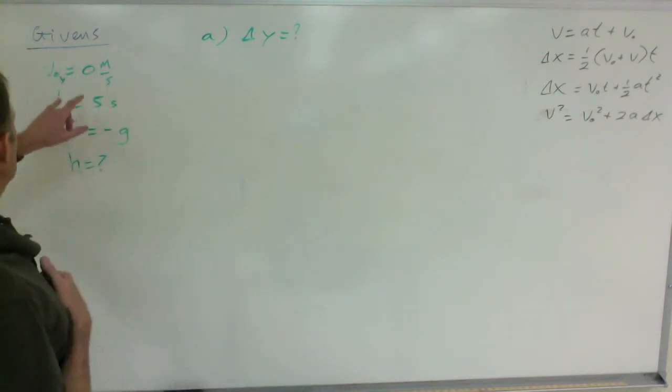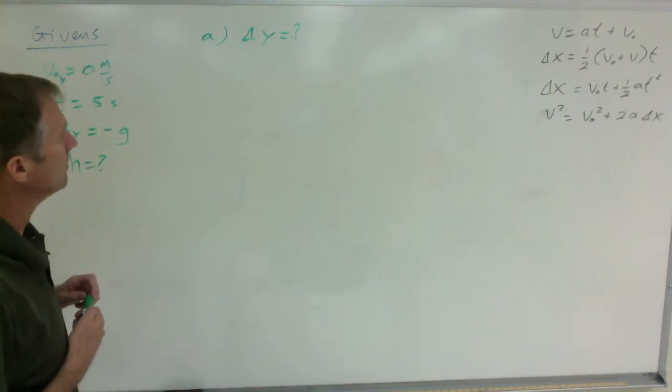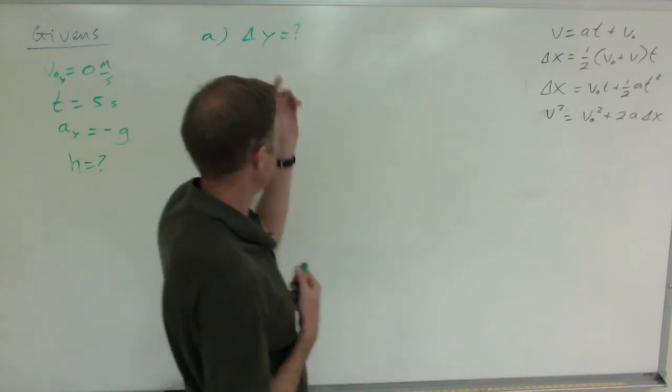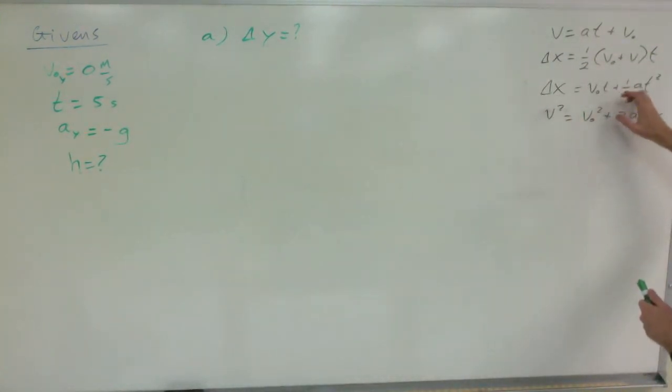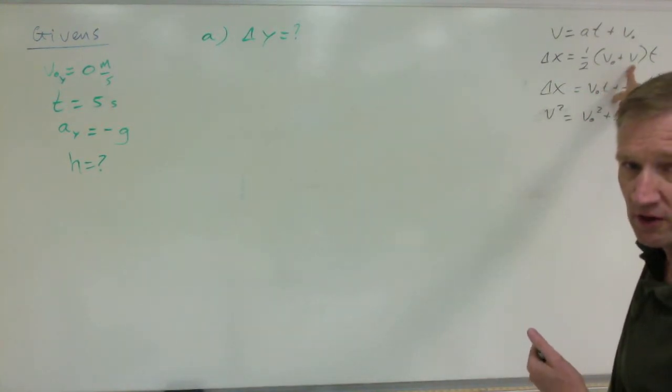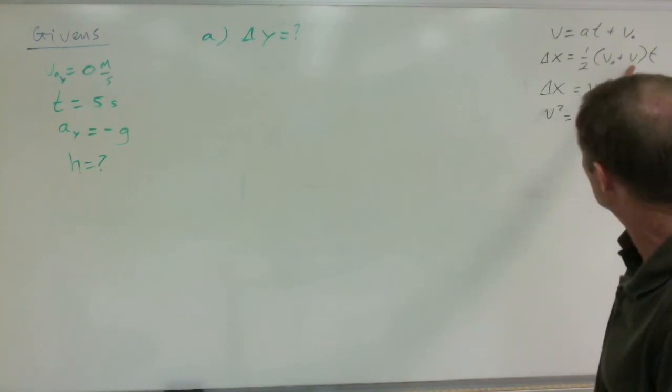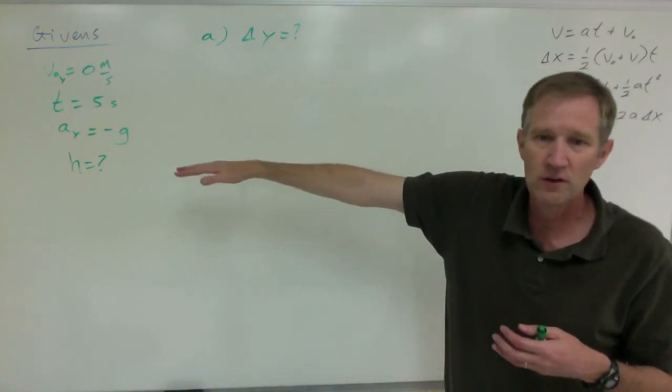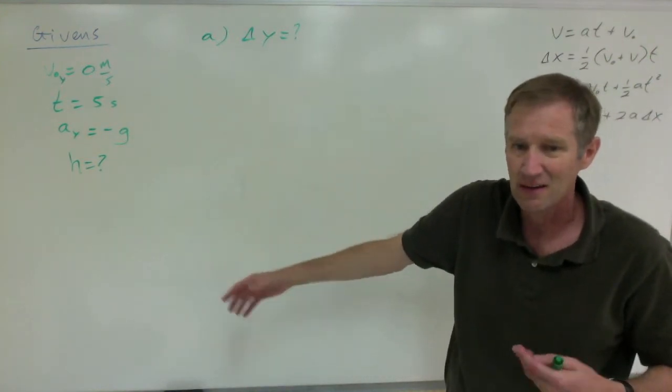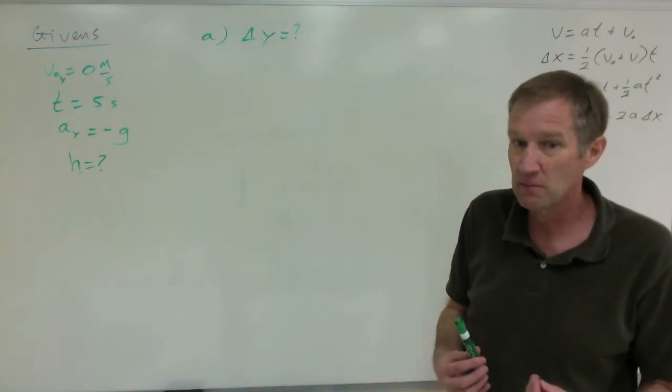What equation has initial velocity in it, has time in it, and acceleration and displacement? This equation. You cannot use this one. A lot of folks want to use this equation because they think they know the final velocity. The thing's falling isn't going to stop when it hits the ground. Not when it has an acceleration of negative g. It only has an acceleration of negative g when it's not touching anything.